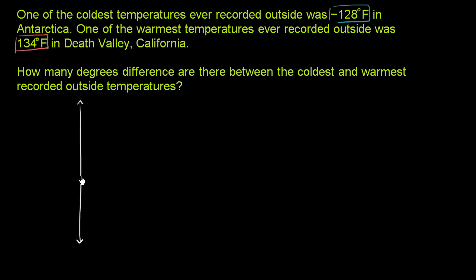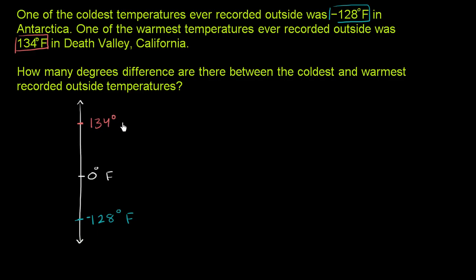This right over here is 0 degrees Fahrenheit, which is of no special significance. If it were Celsius, we'd be talking about the freezing point, but for Fahrenheit that happens at 32 degrees. So let's say this is 0 degrees Fahrenheit and let's plot these two points. One of the coldest temperatures ever recorded was negative 128 degrees Fahrenheit — that's right down here. And one of the warmest temperatures ever recorded was a positive 134 degrees Fahrenheit — that's up here.